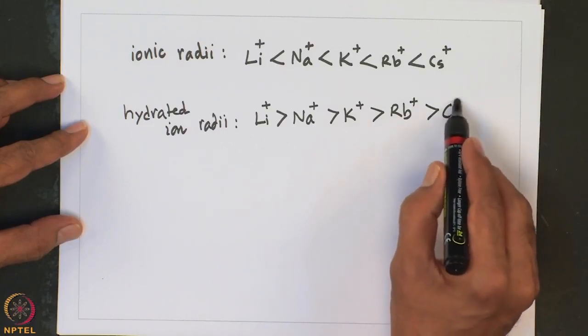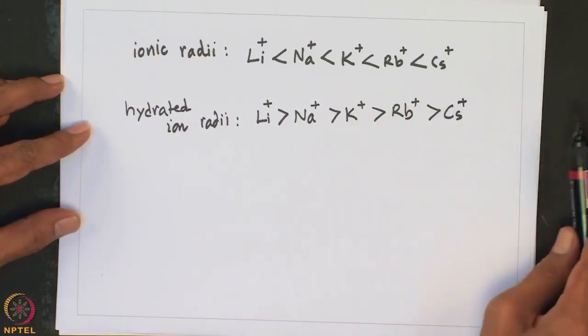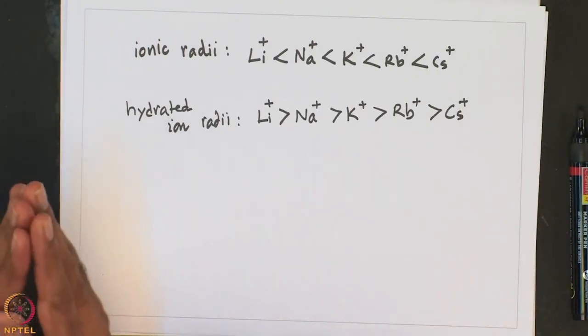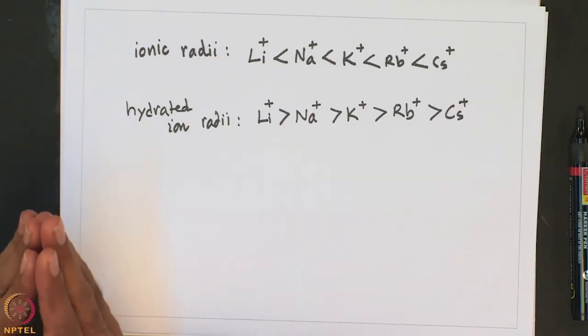So, we have to look into it. What is the reason for this? Let us look into first ionic radii. Here we know that the size of atoms increases down the group. As a result, the energy of removing the valence electron also increases. This is according to the periodic trend. Lithium is the smallest and cesium is the largest ion, so ionic radius increases.